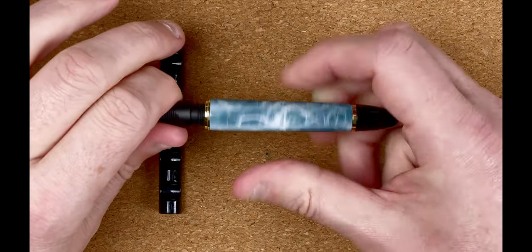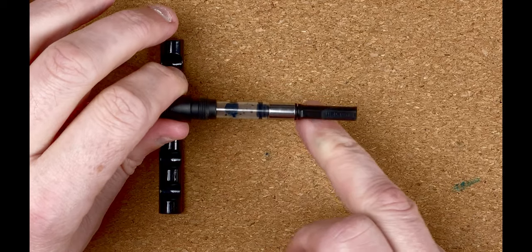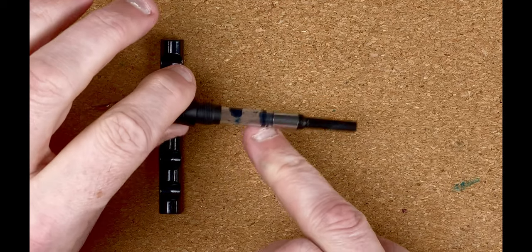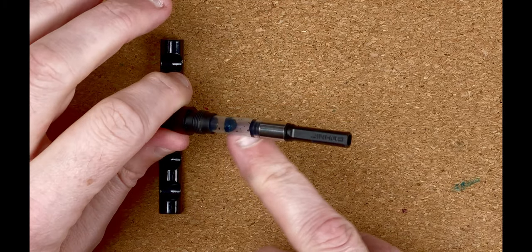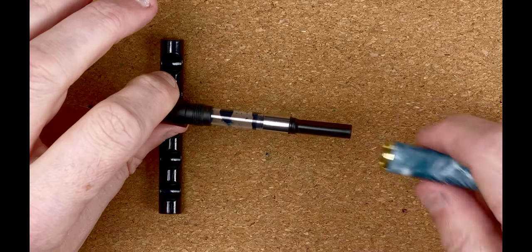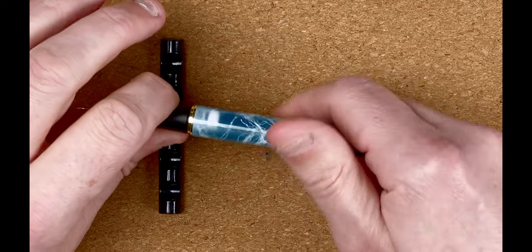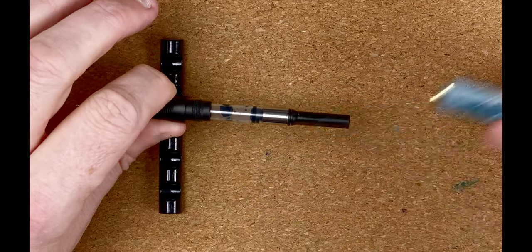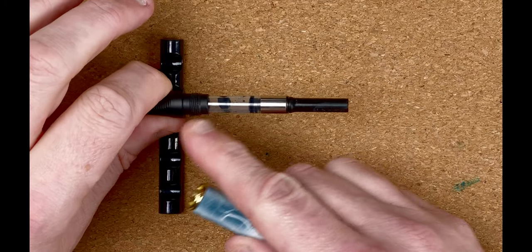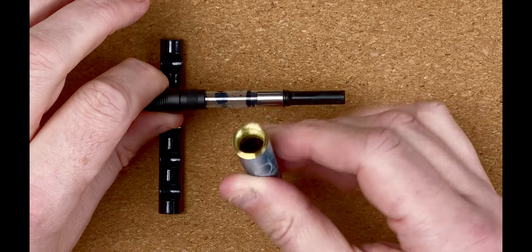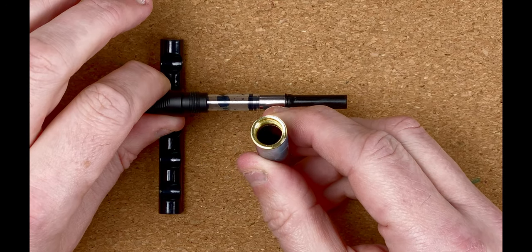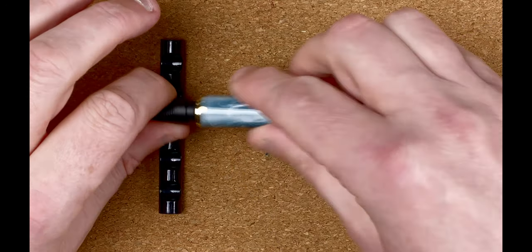If we unscrew the body, it does come with a converter. As you can see, this is virtually out of ink, so I'm hoping we've got enough to do our writing test today. That just screws back on. It's metal on plastic, so we've got plastic there but metal inside the body here.